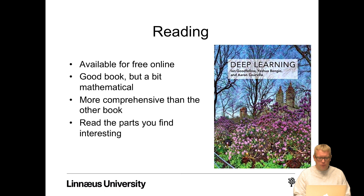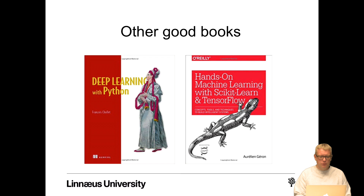The Deep Learning book by Goodfellow, Bengio, and Courville is also available for free online. It's a very good book but a bit mathematical and comprehensive, so read the parts you find interesting. Two other good books I recommend, though not mandatory: 'Deep Learning with Python' by François Chollet, and 'Hands-On Machine Learning with Scikit-Learn and TensorFlow' by Aurélien Géron — very good practical books with lots of examples for using Python for machine learning.